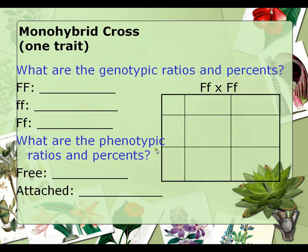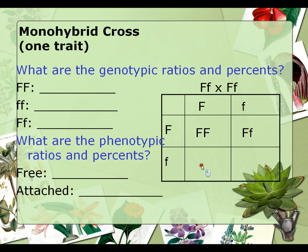Let's take a look at another cross. Here the parents are both heterozygous. We distribute the mother's alleles on one side and the father's alleles on the other side, filling in the boxes. We bring each F down and across into the corresponding boxes. It's generally accepted that you write the capital letter first.